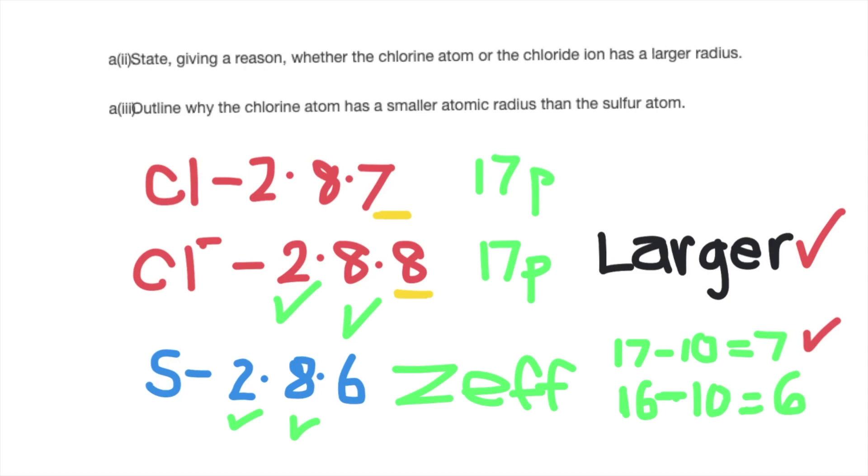Comparing the chlorine atom to the sulfur atom is the next question. You could look at Z effective, the effective nuclear charge, with 16 protons in the nucleus of sulfur compared to 17 in the nucleus of chlorine, but they both have these 10 shielding electrons leaving a Z effective of seven for the chlorine atom and Z effective of six for the sulfur atom. That results in chlorine having a slightly smaller atomic radius than sulfur.